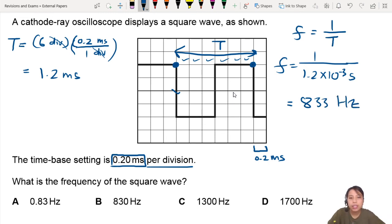And the closest answer, usually they round off to 2 significant figures, and that would be this one. Frequency of a square wave.